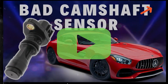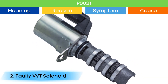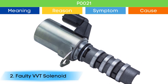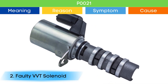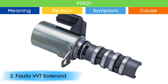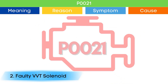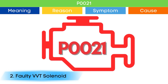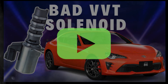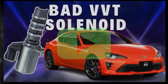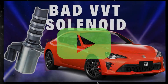Cause number two: bad VVT solenoid. Due to a bad VVT solenoid, the camshaft position advance and delay may not work properly, which may trigger P0021 and other OBD-II codes related to the VVT solenoid, along with symptoms of a bad VVT solenoid. Check our detailed video to learn more about the symptoms of a bad VVT solenoid and related OBD-II codes — link in the corner.